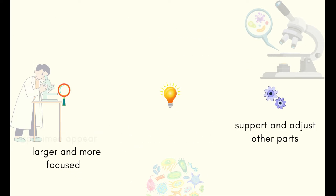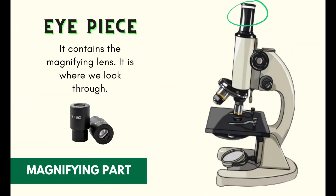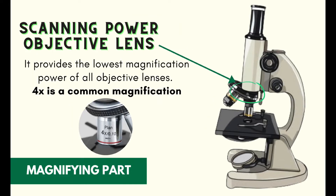The magnifying parts of a microscope are the following. First, the eyepiece — it contains the magnifying lens and it is where we look through. Next is the scanning power objective lens, which provides the lowest magnification power of all objective lenses. It has 4 times magnification.